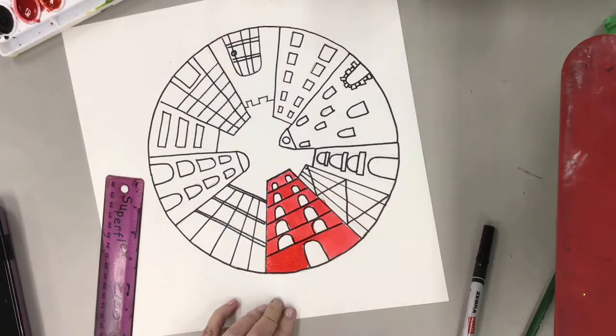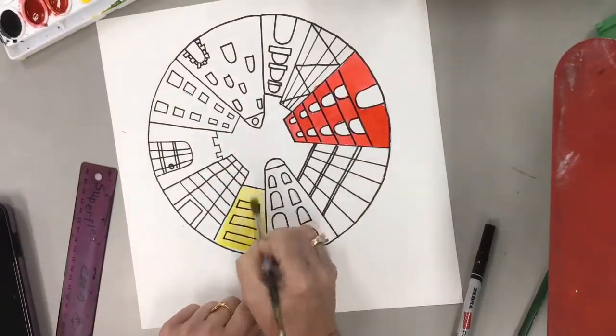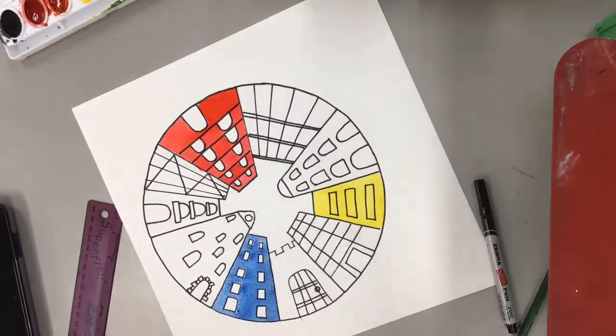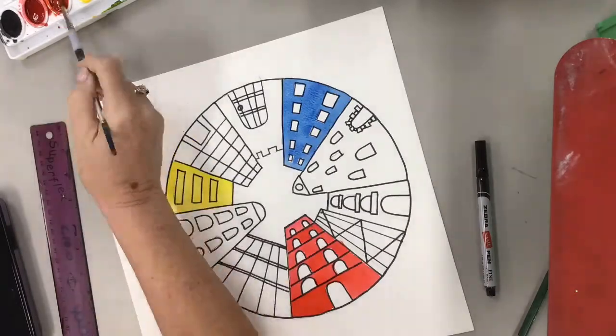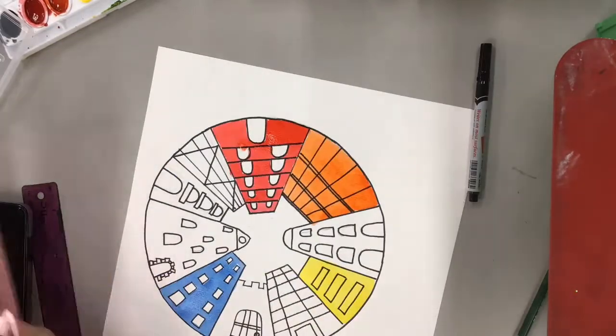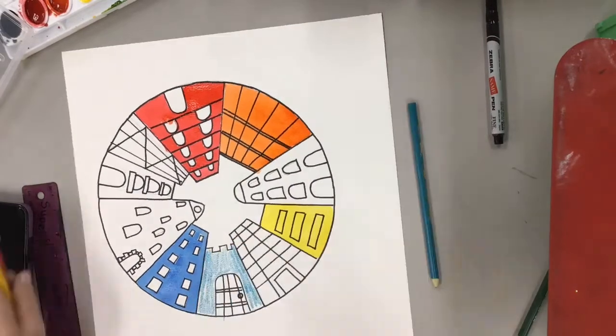And once I've got that done, then I can go in and I'm gonna put in my yellow. Notice I'm leaving space in between my primary colors so I can put my secondary colors in between. All right, so between yellow and red we have an orange, and then I want to make a yellowy orange too, but I'll get back to that.